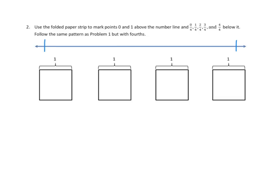I'm going to mark this as 0, all the way down to this as 1. Now, it says mark 0 and 1 above the number line, so I'm going to go ahead and do that. There's 0, and there's 1.